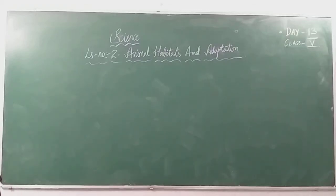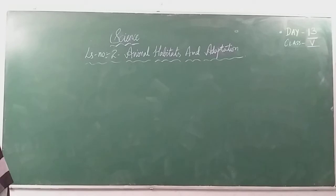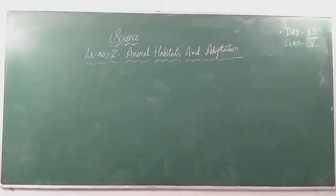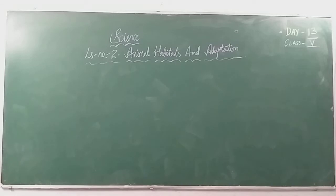Today we are going to start our new lesson: animal habitats and adaptation. Why do you think a lion lives in a den and not in water? Home and habitat are terms we often use to describe the place where an organism lives, however these terms are very different from each other. For example, the home of a lion is a den, but its habitat is a forest.